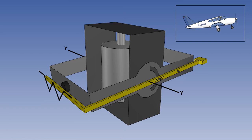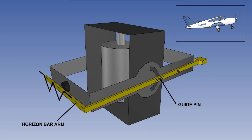The way it works is that if the aircraft should now pitch up, the outer gimbal, which is in effect attached to the aircraft, and therefore the gullwing motif, will rotate about the axis YY. A guide pin protruding from the vertically stabilised inner gimbal forces the horizon bar down. The movement is magnified by the length of the horizon bar arm, and the result is that the horizon bar is now below the gullwing motif, indicating the aircraft has pitched up.